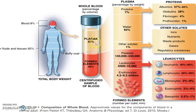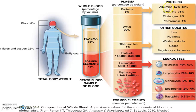In the 55% plasma, 92% is water, 7% is protein, and 1% are other solutes. All biochemical constituents like carbohydrates, proteins, vitamins, minerals, hormones, enzymes, pigments, and gases are present in the plasma portion. The plasma is the yellow-colored liquid portion of the blood. The major proteins present in plasma are albumins, globulins, fibrinogen, and prothrombin.